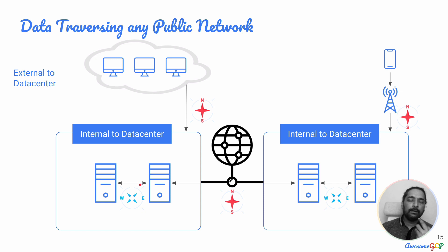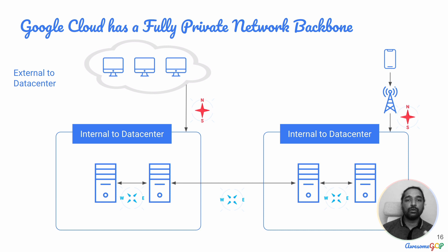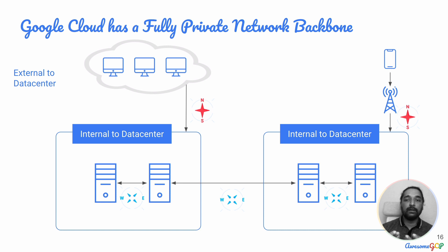On the other hand, Google has its own fully private network backbone. So once you enter the Google network, data traveling between data centers remains on its own private network. In the case of Google Cloud, you would consider it east-west traffic. You need to check with your cloud provider whether they have a complete private network backbone. To the extent I know about Google Cloud, it does not go on the public network once it enters the Google network — only when it responds to consumers does it go back to the public network.